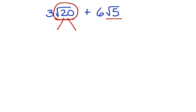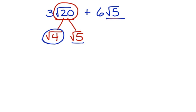Let's factor the square root of 20. We can factor it into the square root of 4 times the square root of 5 — now we have a like term. What about the square root of 4? Can we simplify that? We can simplify that to 2. So the square root of 20 becomes 2 square roots of 5.